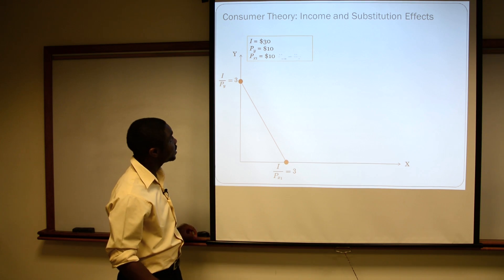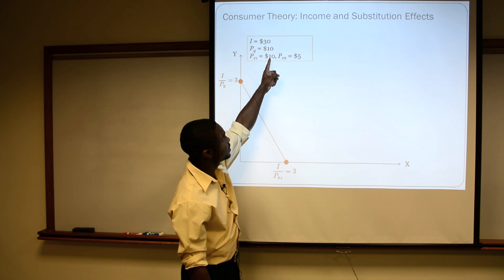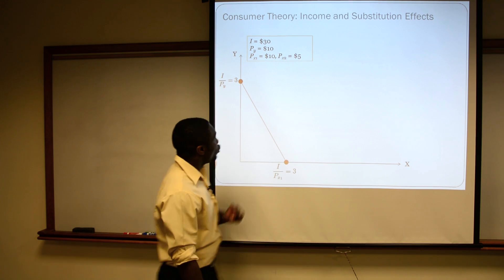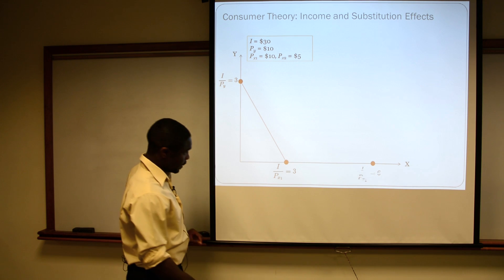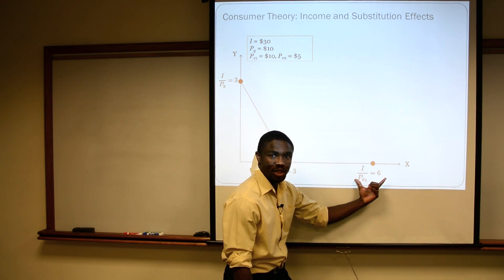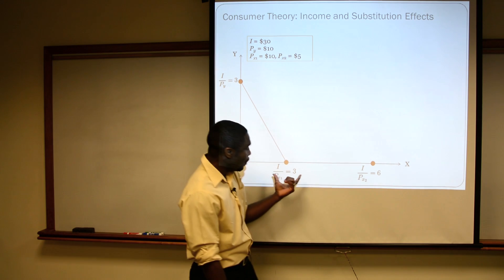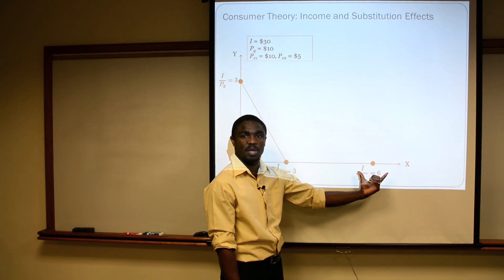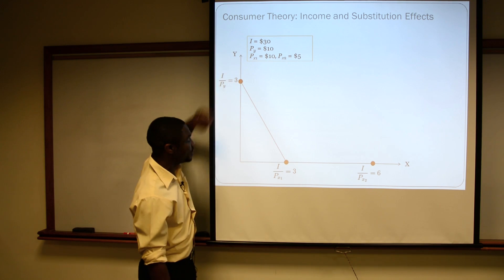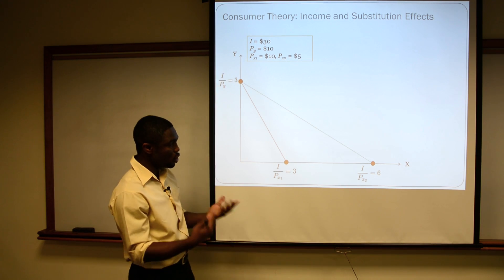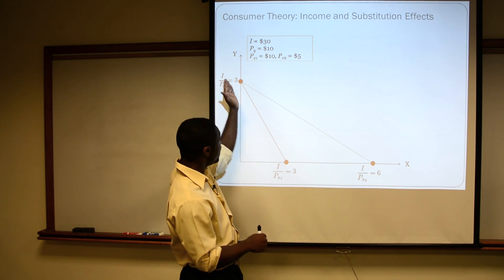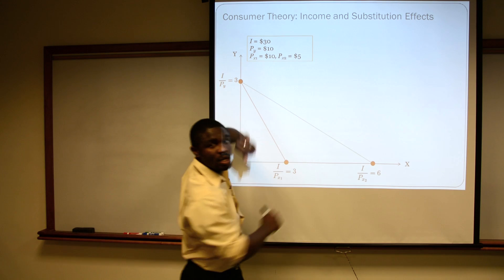Let's now assume that the price of good X falls. Let's assume it falls to five. Recognize firstly here that our X-intercept now changes. I can now buy twice as much as I used to be able to buy. The price of Y, we're assuming, hasn't changed and so this intercept does not change. Our new budget line, the green line there, we've depicted as just a pivot of the budget line outwards.